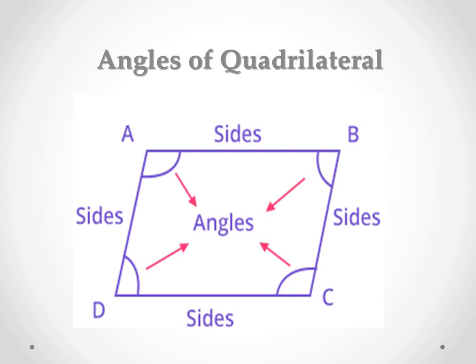Angles of a quadrilateral. Here you see angles A, B, C, and D. All are the four angles of the quadrilateral.